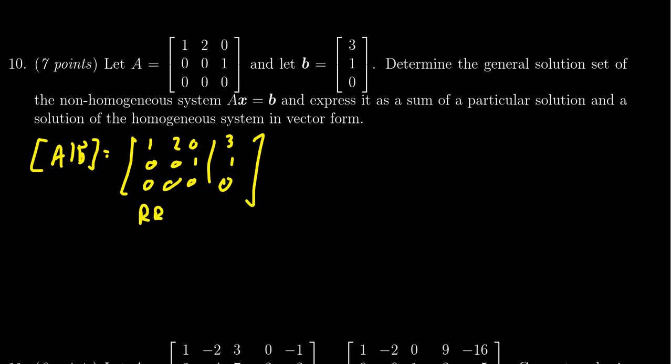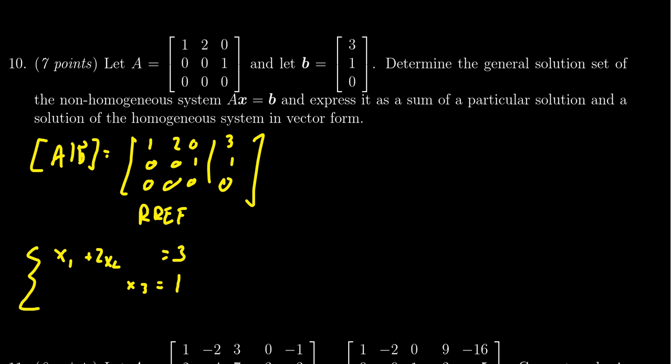If it helps, we can think of the corresponding system of linear equations. This would say x1 plus 2x2 equals 3, x3 equals 1, and then 0 equals 0 which really doesn't help us at all.